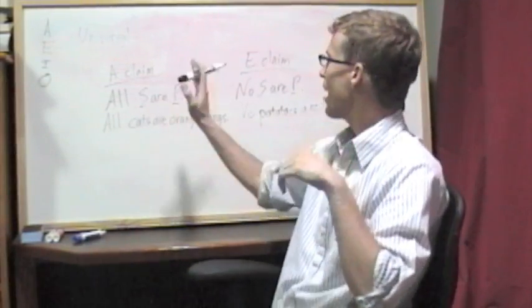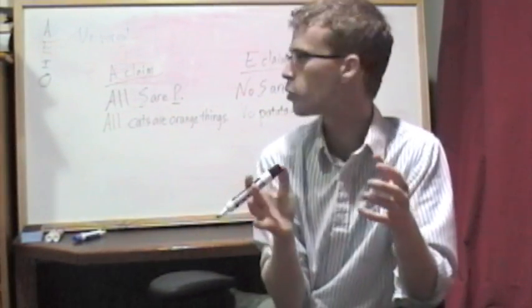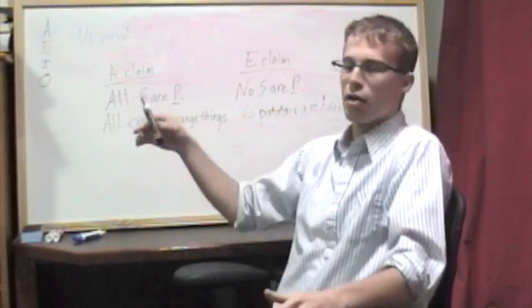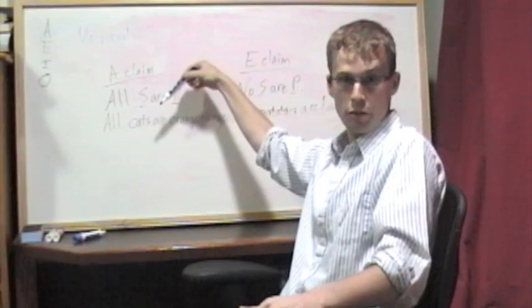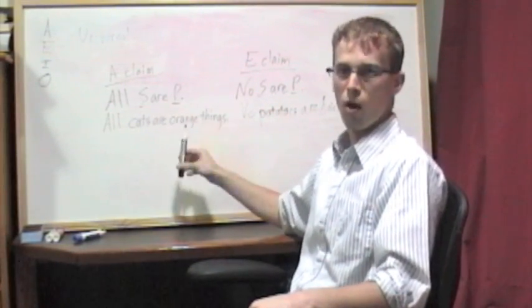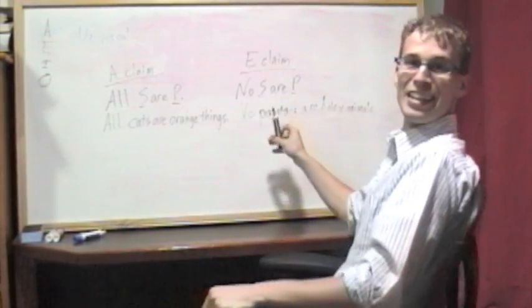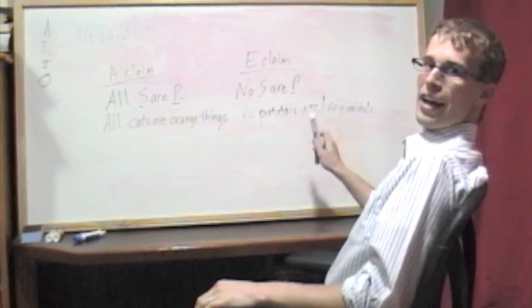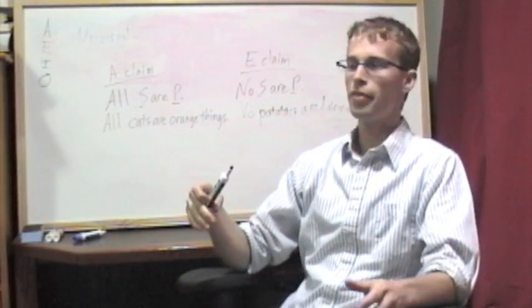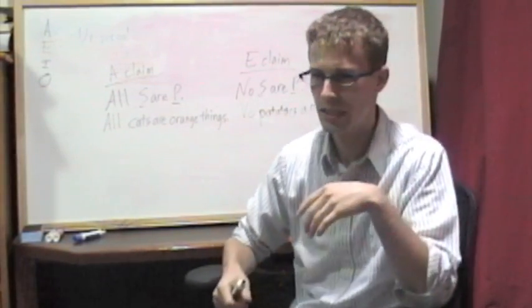So, you can see how A claims and E claims are about the entire category. In the first one, it's all of the cats with no exception. There's not going to be a cat, if this claim is true, that's not an orange thing. All of the cats are an orange thing. Same thing with the E claim. No potatoes are hairy animals. There's not going to be a single potato that is a hairy animal. So, it's about the whole class, not just part of the class.